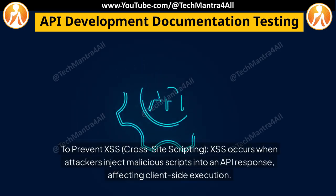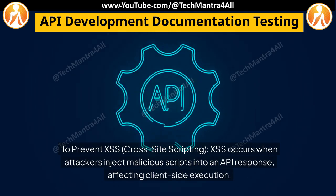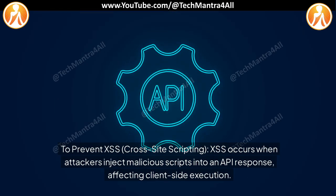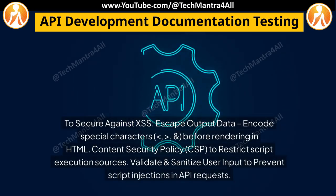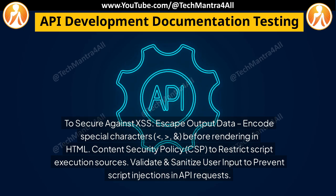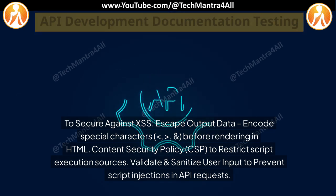To prevent XSS (cross-site scripting): XSS occurs when attackers inject malicious scripts into an API response, affecting client-side execution. To secure against XSS, escape output data and encode special characters before rendering in HTML. Use a Content Security Policy (CSP) to restrict script execution sources. Validate and sanitize user input to prevent script injections in API requests.